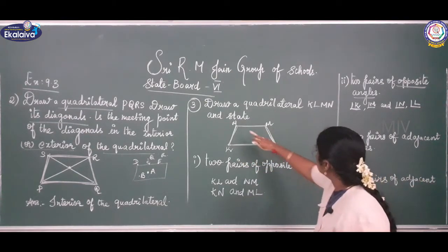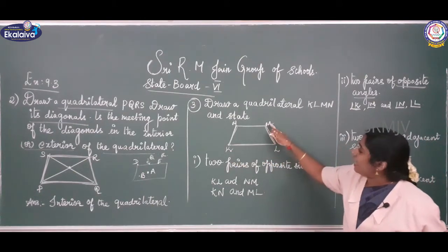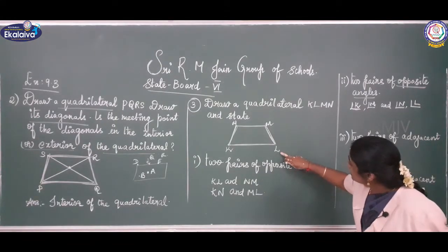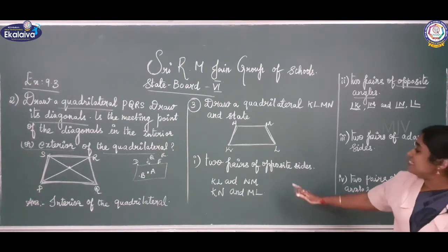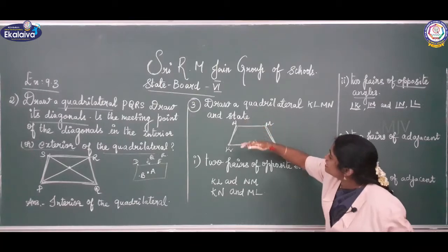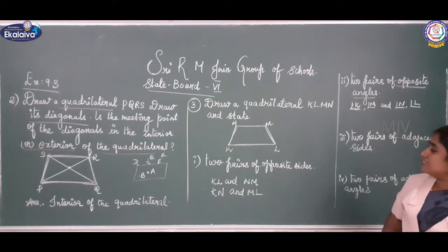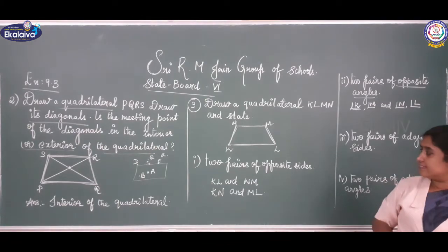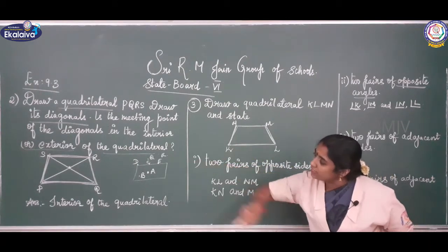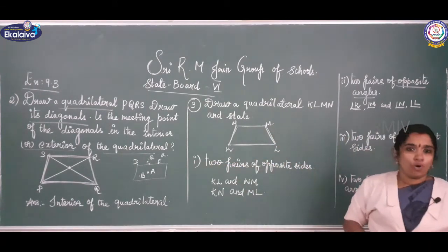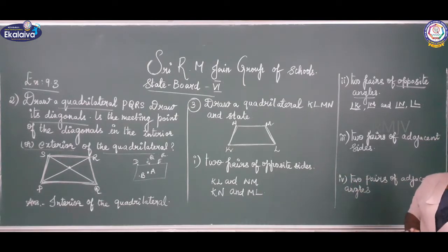So angle K and angle M are opposite, and angle L opposite is angle N. If it is a side I write the side: KL, LN, M and KN, ML. For opposite angles - just see the diagonals. K-M is your opposite angle pair, and angle L and angle N are the opposite angles.